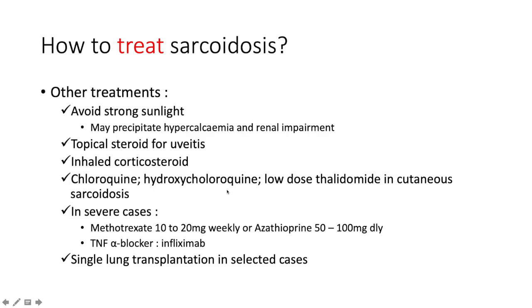Chloroquine or hydroxychloroquine and low-dose thalidomide can be used for cutaneous sarcoidosis — though remember thalidomide is associated with teratogenicity and phocomelia. In severe cases, steroid-sparing agents are an option.